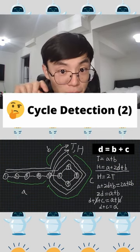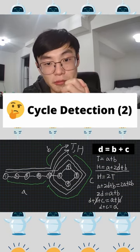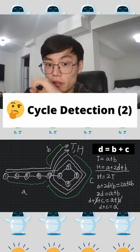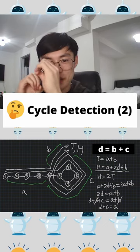The hare travels twice the distance as the tortoise. We expand one of the cycles to B plus C. Cancelling out the common variables, we have D plus C equals A. If you think about it visually, after they meet, keep the hare at the same spot, tortoise at the beginning. Think of the hare rewinding the cycle as the tortoise travels forward.